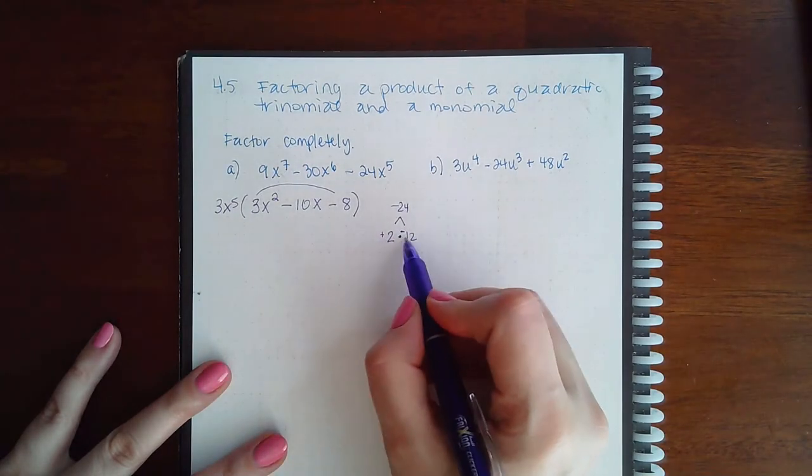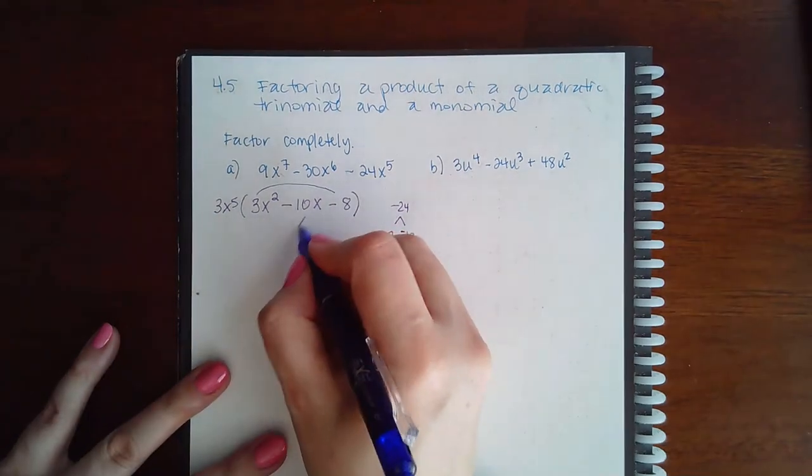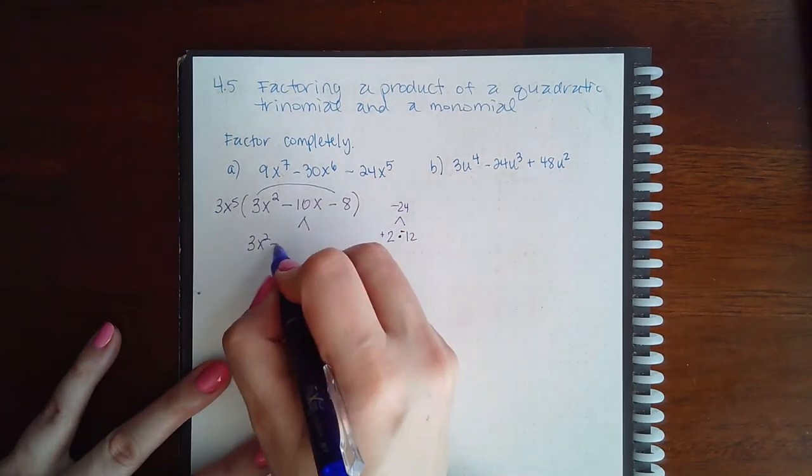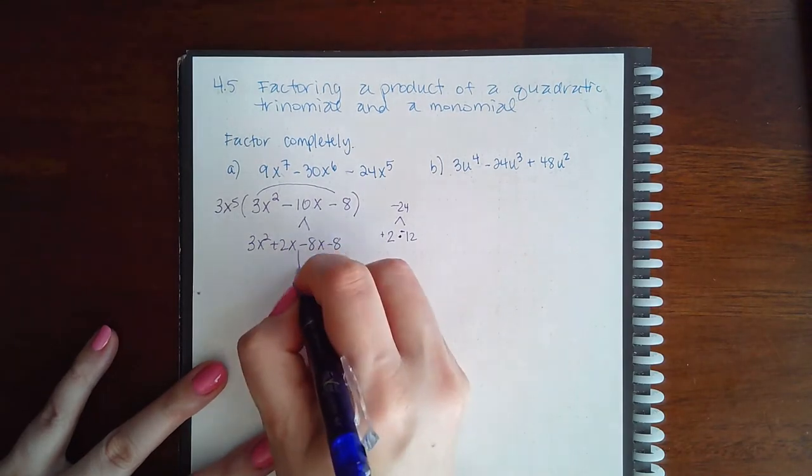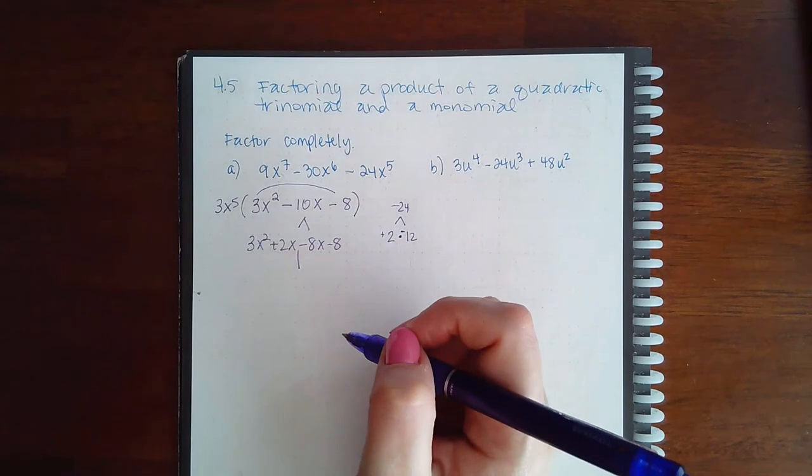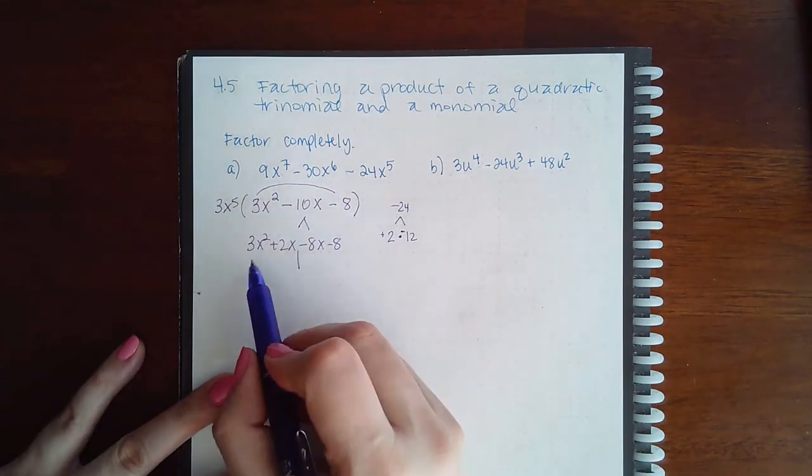So we're going to split this middle term and we have positive 2x minus 8x minus 8. Chop in half, and this one won't be able to factor anything here.